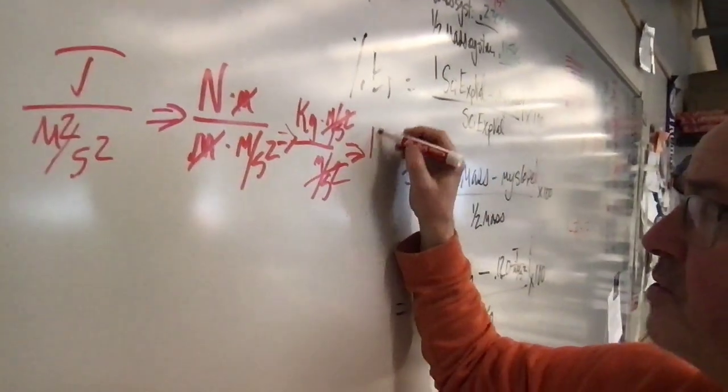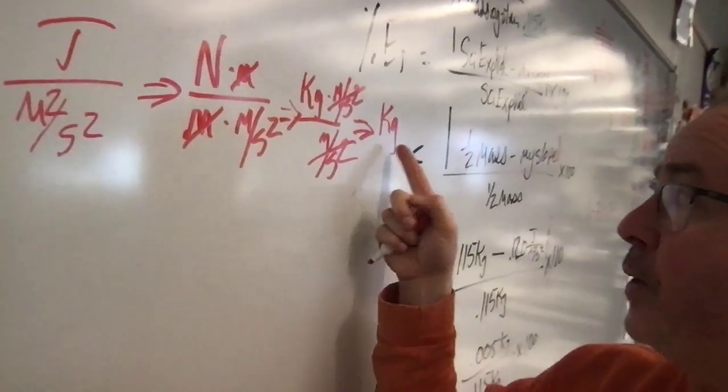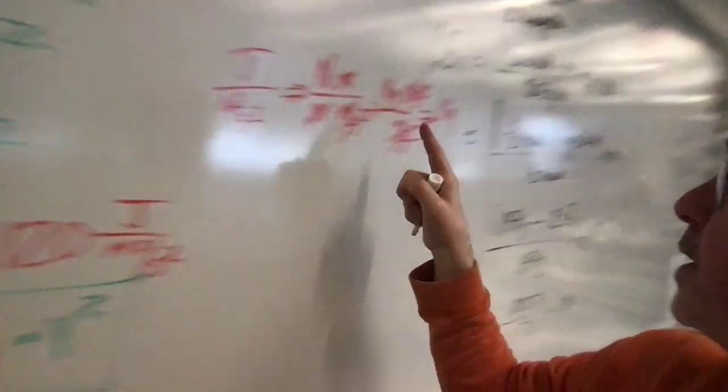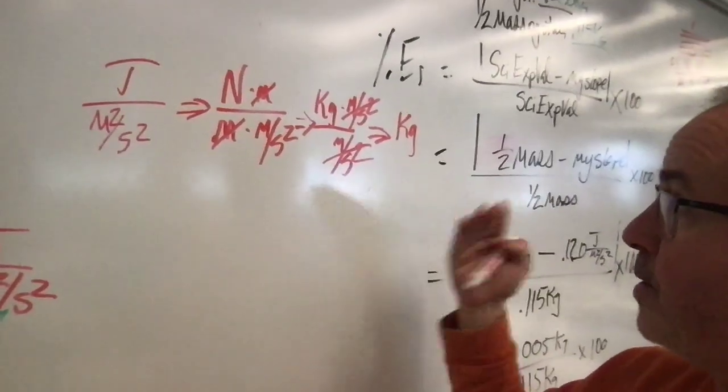And with meters per second squared on the bottom the meters per second squared reduce to one and that leaves us with units of kilograms which guided us to the idea of what did we hold constant in the experiment that was measured in mass.